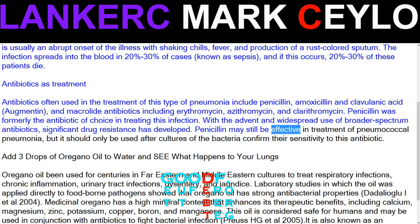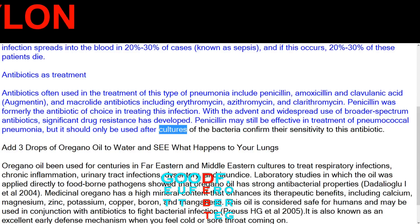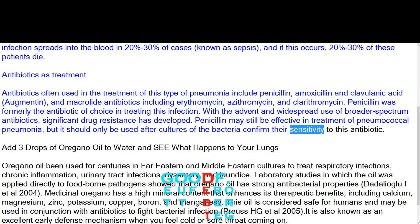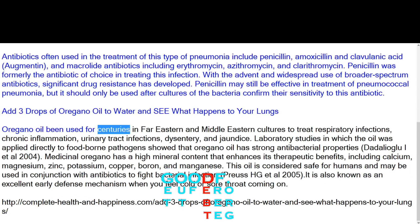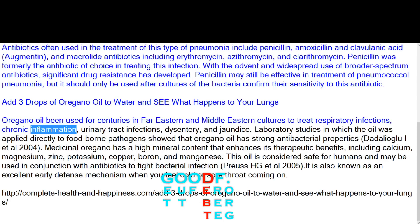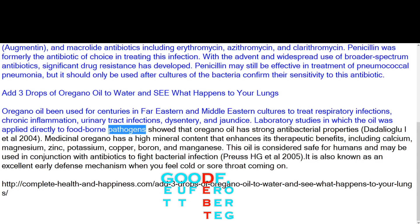Penicillin may still be effective in treatment of pneumococcal pneumonia, but it should only be used after cultures of the bacteria confirm their sensitivity to this antibiotic. Oregano oil has been used for centuries in far eastern and middle eastern cultures to treat respiratory infections, chronic inflammation, urinary tract infections, dysentery, and jaundice.